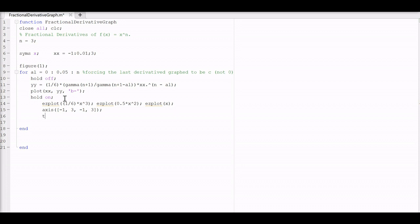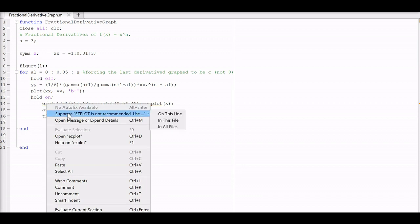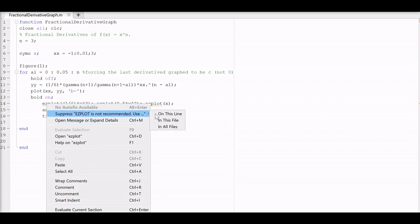And let's see, for the title, I'm going to show, say, let's plot the alpha value. So alpha value is equal to num2string of alpha. So we can see where we are in the transitional period. And we can sort of ignore this plot. So suppress in all files.